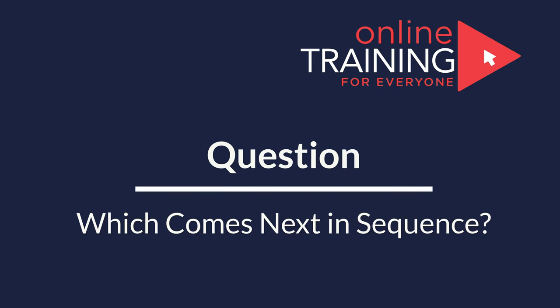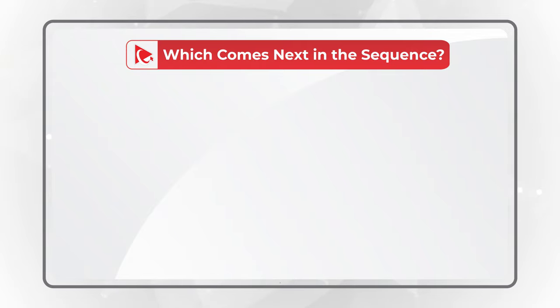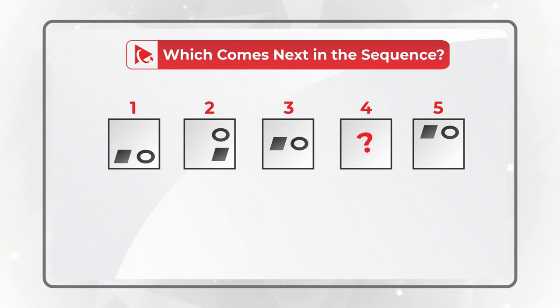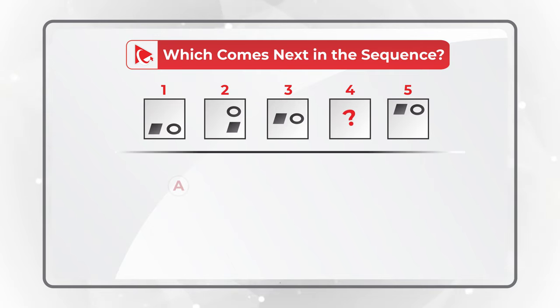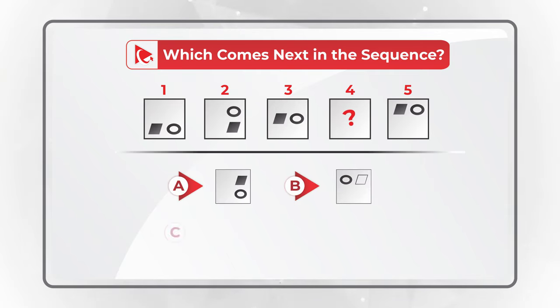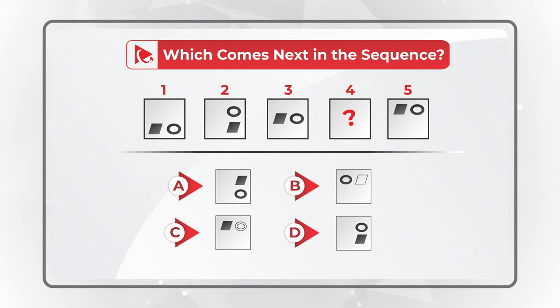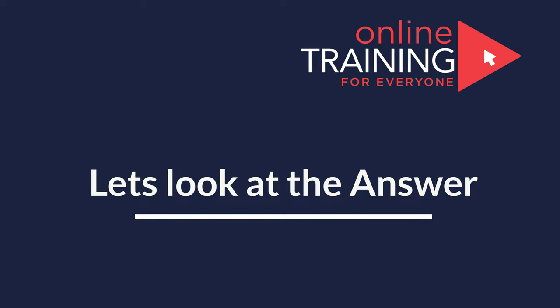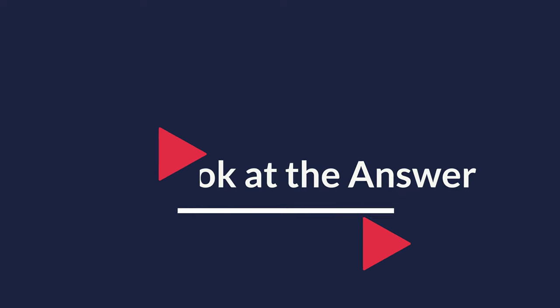I love this question because it really makes you think to get to the correct solution. You need to determine which shape comes next in the sequence. You're presented with a series of five shapes. Squares 1, 2, 3, and 5 have smaller shapes inside, and you need to determine shape 4. You have four different choices: A, B, C, and D. Give yourself a little bit of time and look closely to see if you can get to the correct answer.